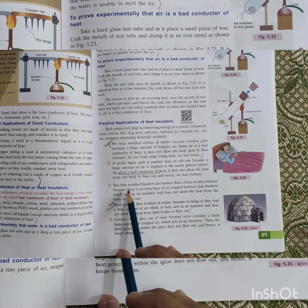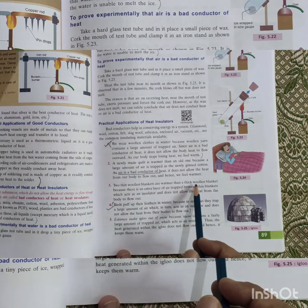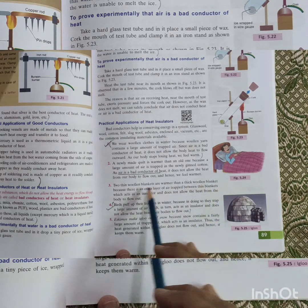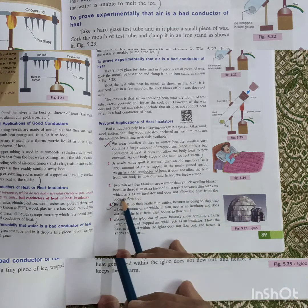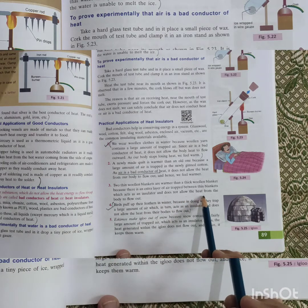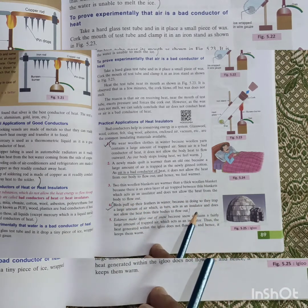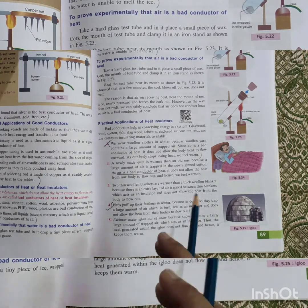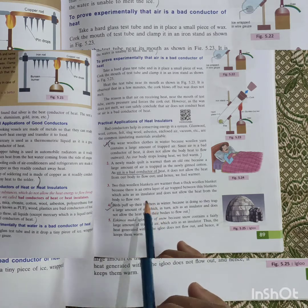Another example is given. Two thin blankets are warmer than a thick woolen blanket. Why? There is an extra layer of air trapped between the thin blankets which acts as an insulator and doesn't allow the heat from the body to flow out. This is the practical example. There are so many practical examples and applications. I just read a few and tried to explain a few.